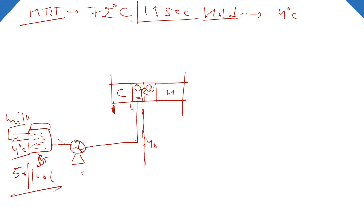At around 40°C, the specific operations performed in a dairy plant are filtration, clarification, or cream separation. So if we place a cream separator in this line, our separation work is also done here. A cream separator is placed at this point.